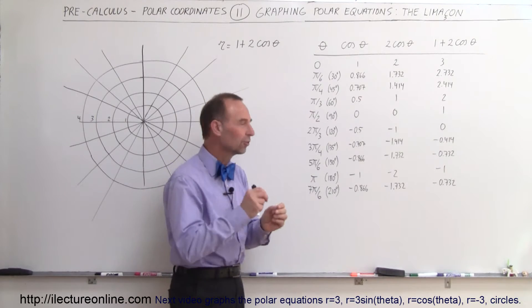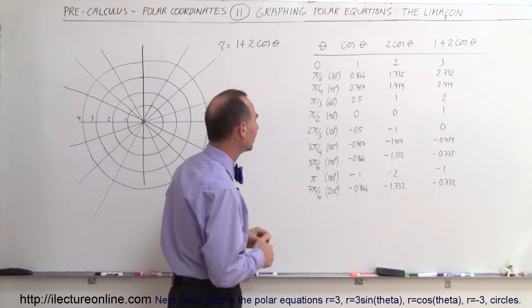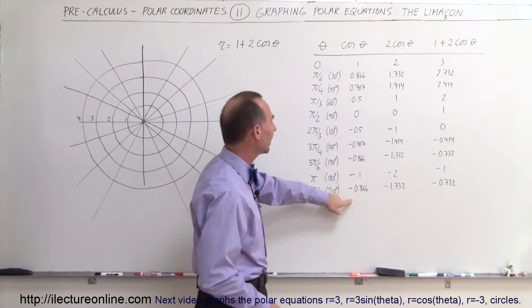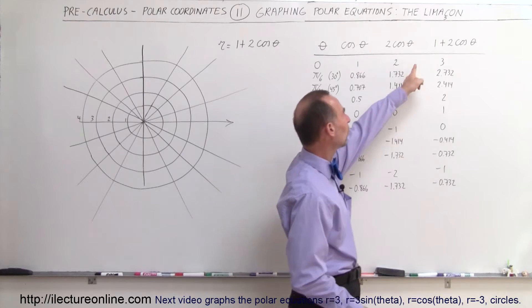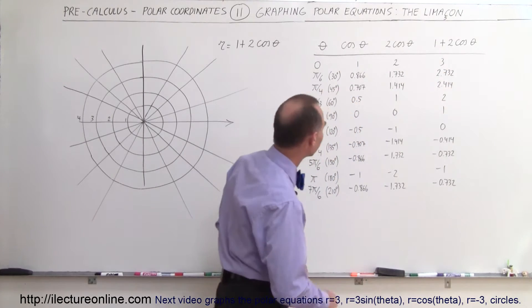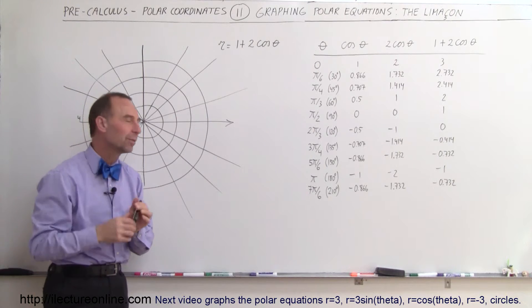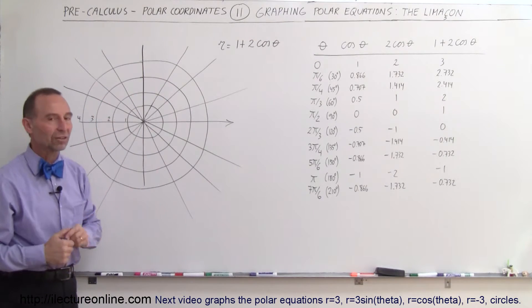Sometimes it's easier to follow directions in degrees rather than radians. And then we have the cosine of that angle calculated, twice the cosine of the angle calculated, and then 1 plus twice the cosine of the angle calculated, which ultimately is r. That would then be the distance away from the origin in that particular direction theta.